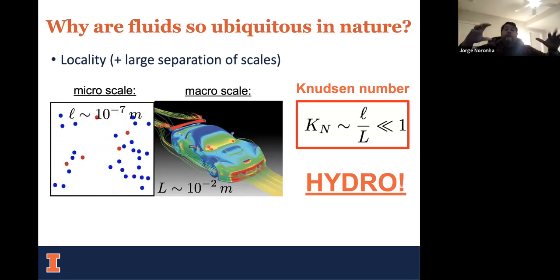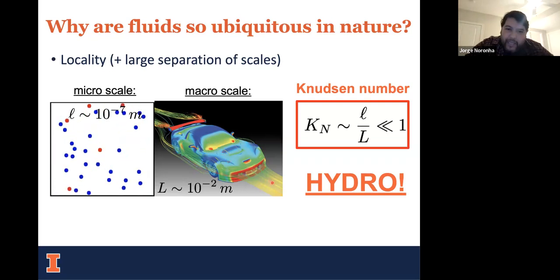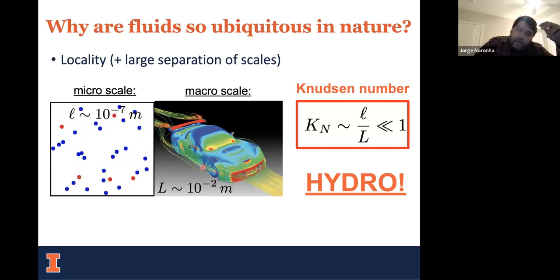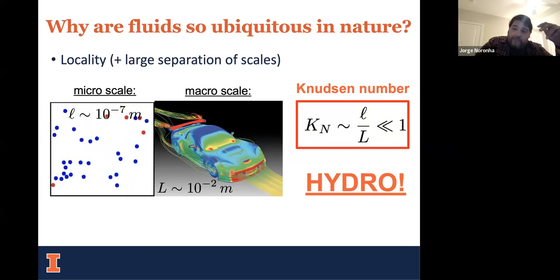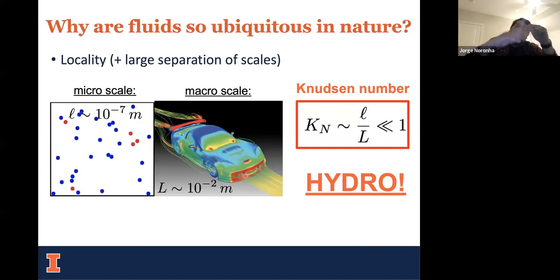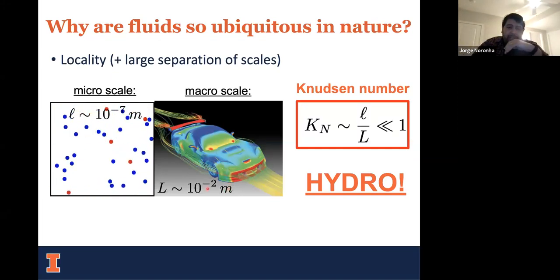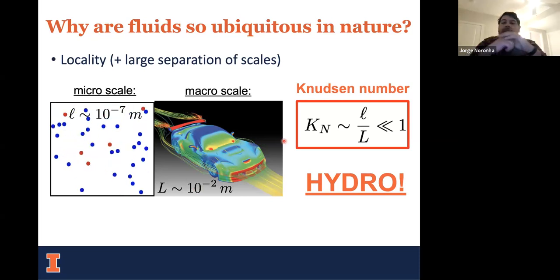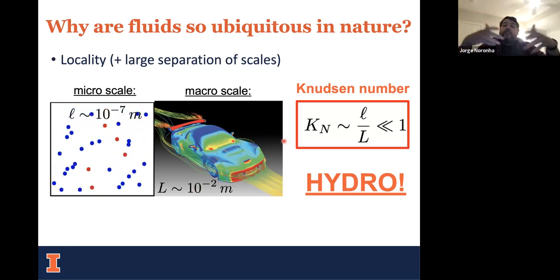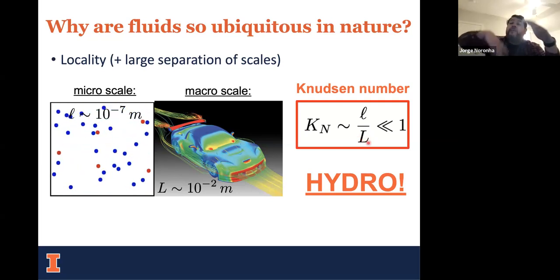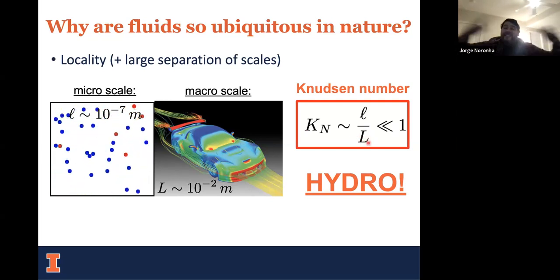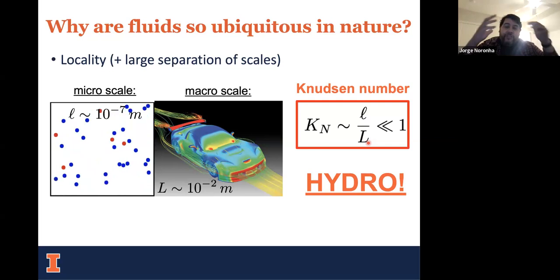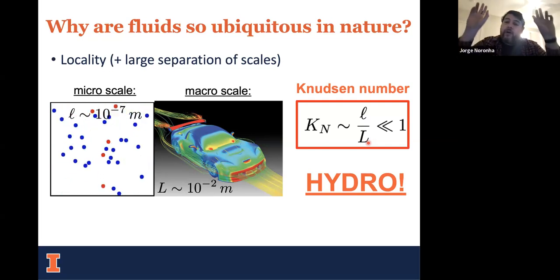It's very important to have a well-defined separation of scales, at least theoretically. You have some micro scale L and some macroscopic scale — in this drawing, it's the scale associated with gradients of energy and flow around this car in a simulation of wind. The large scale here is about 10^-2 meters. A useful quantity to estimate whether something looks like a fluid is called the Knudsen number — the ratio between the small and the large scale. When this ratio is very small, we associate that motion with fluid behavior.